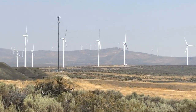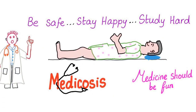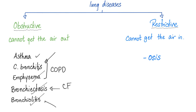Lung diseases are divided into obstructive and restrictive. Obstructive: I cannot get the air out. Restrictive: I cannot get the air in — my lungs are restricted from filling. Obstructive diseases include asthma, chronic bronchitis, emphysema, bronchiectasis, and bronchiolitis. Cystic fibrosis can lead to bronchiectasis easily, and can also lead to chronic bronchitis or bronchiolitis. In brief, cystic fibrosis is an obstructive lung disease.